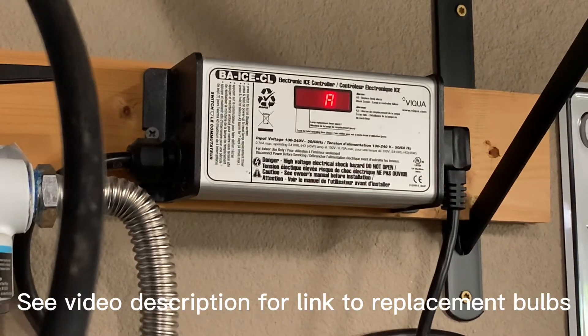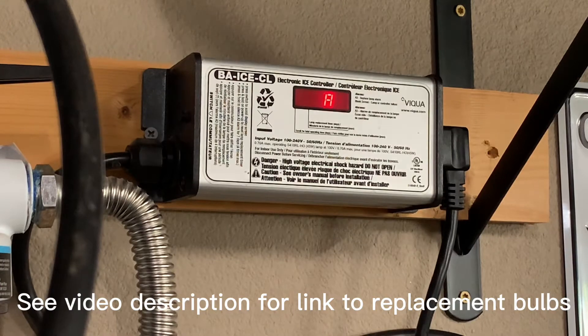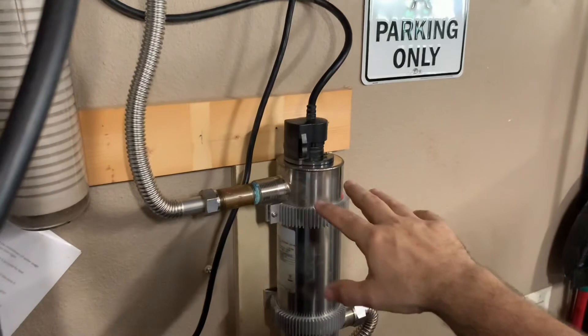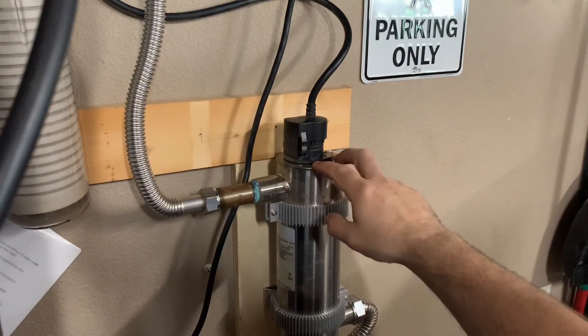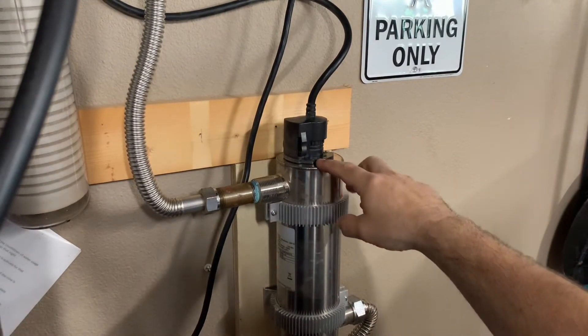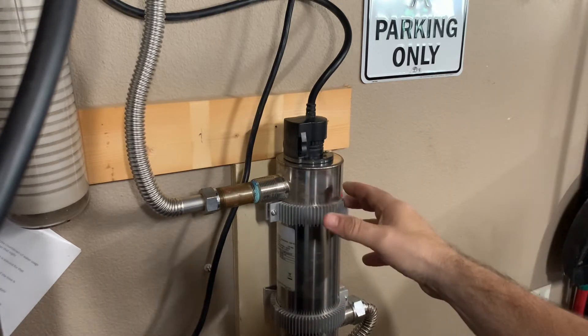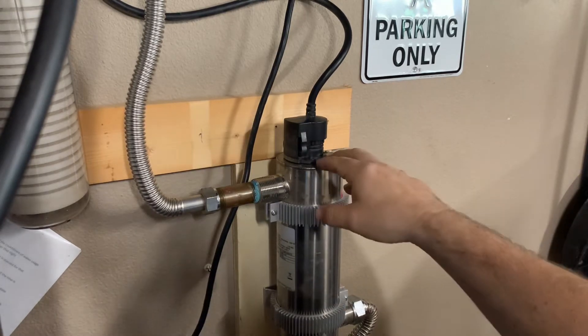Changing that out and replacing it from the unit itself here is not very difficult. I'll show you how to replace the bulb, how to take out the crystal sleeve liner that's inside your unit and how to clean that and put it back in.